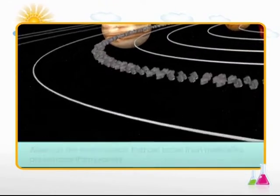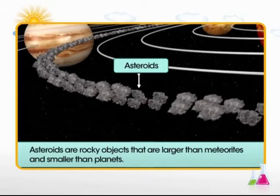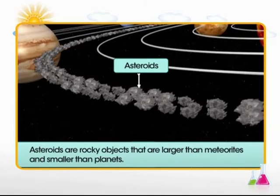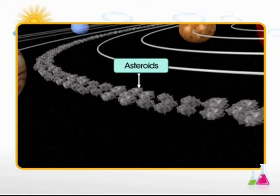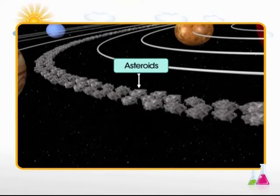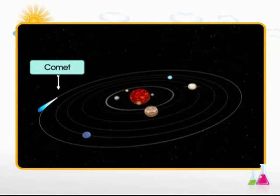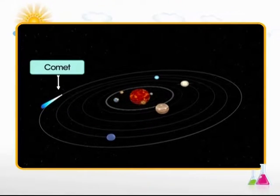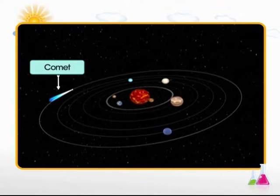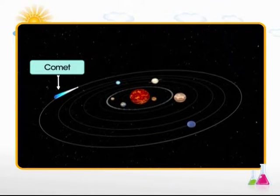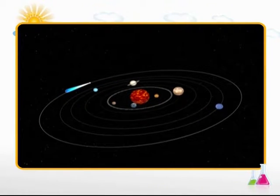Asteroids are rocky objects which are larger than meteorites and smaller than a planet. Most asteroids are found in a belt between the orbits of Mars and Jupiter. A comet is a body made up of gases and dust and ice crystals and have a long luminous tail. Comets look like stars but they orbit around the stars, sometimes taking thousands of years to do so.